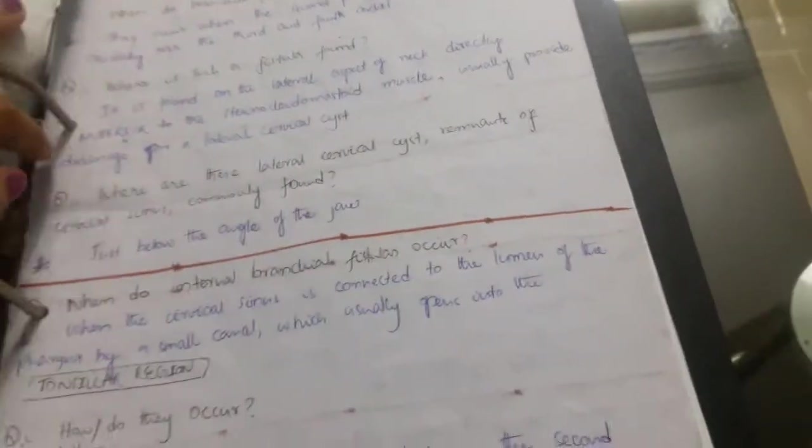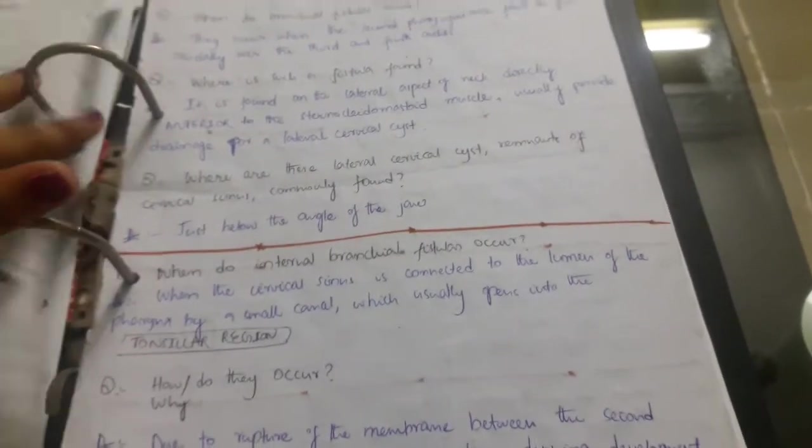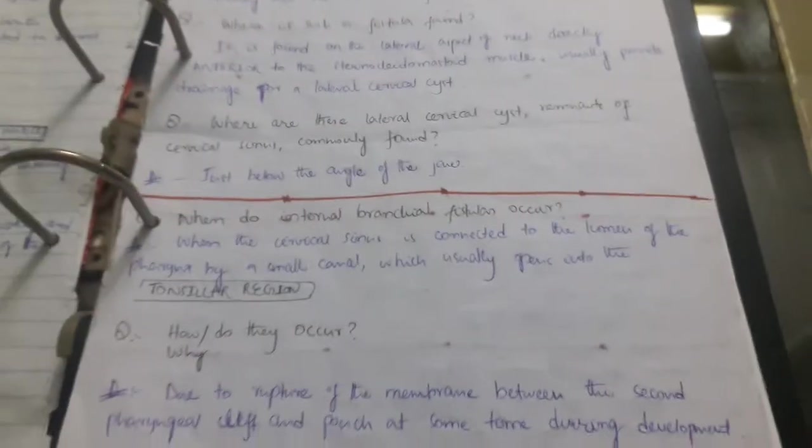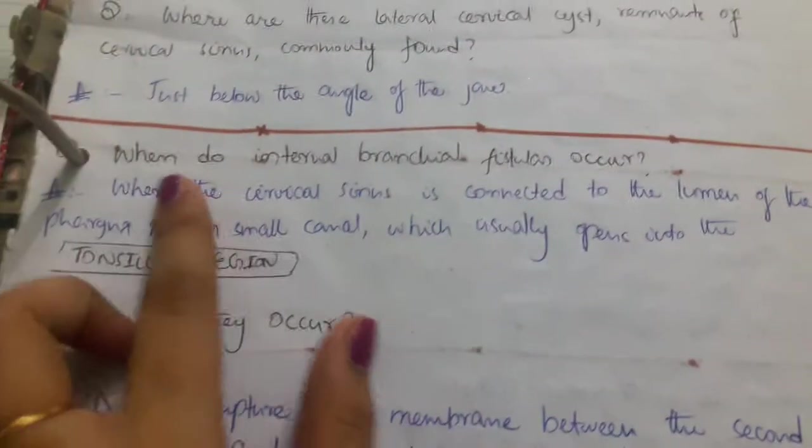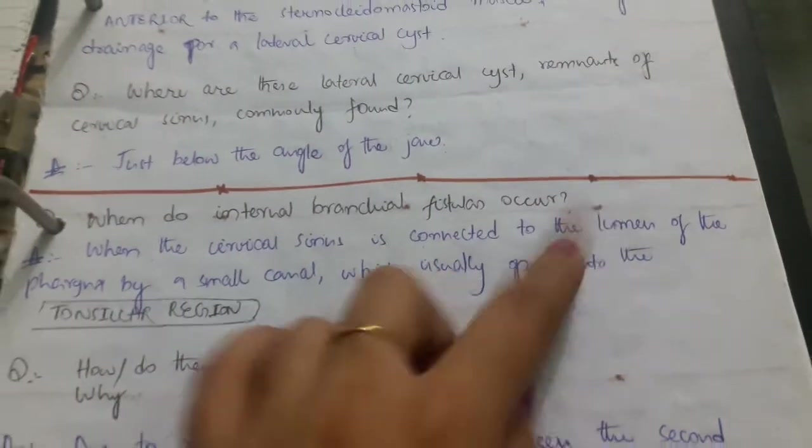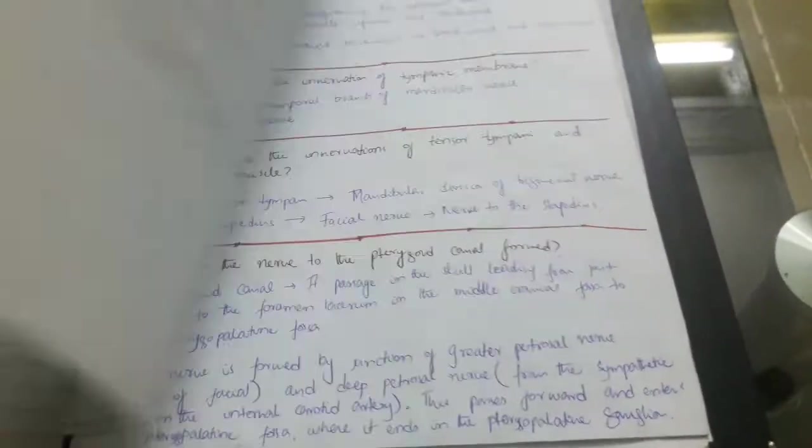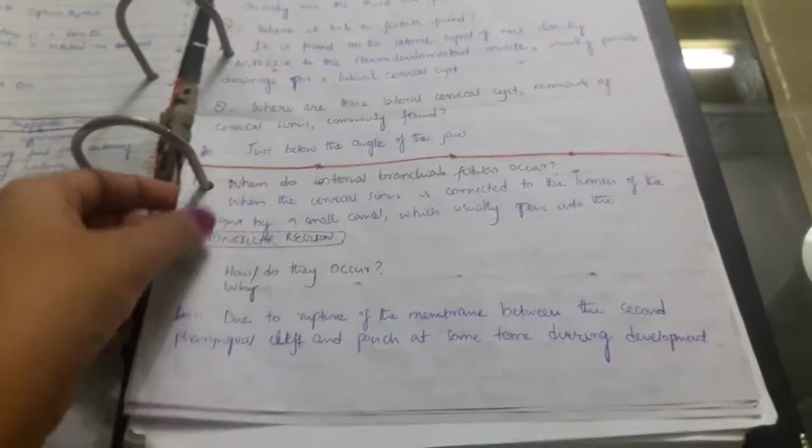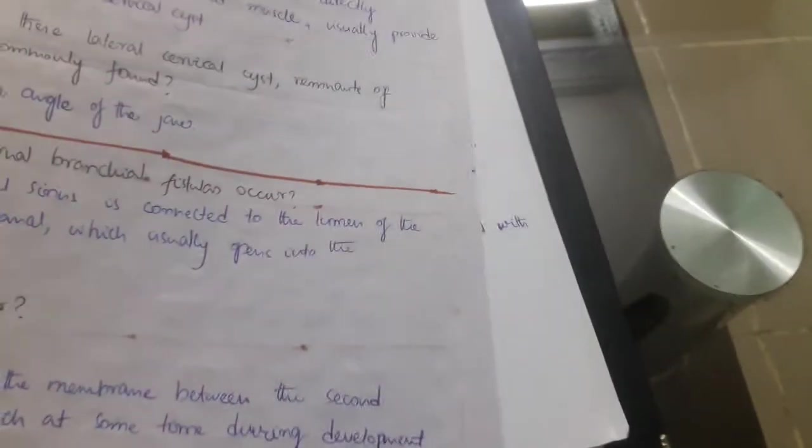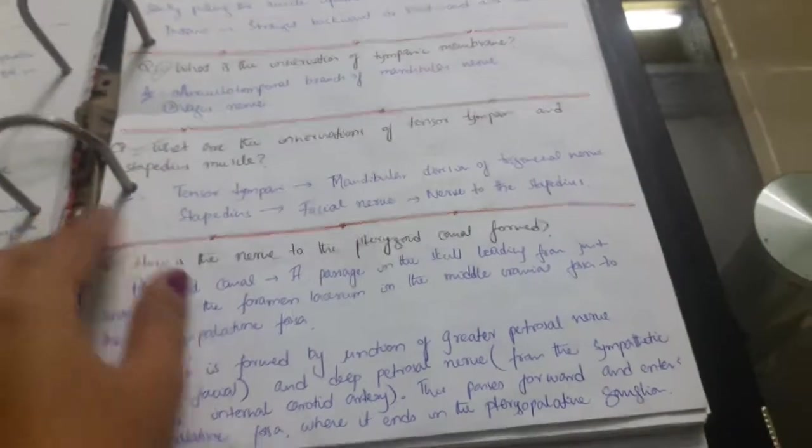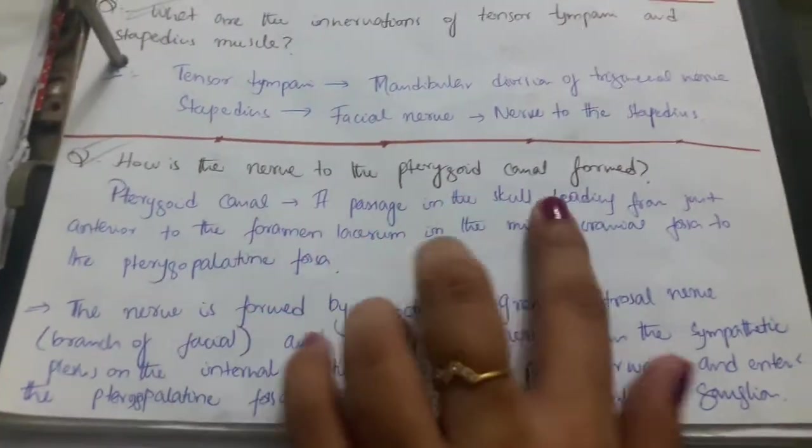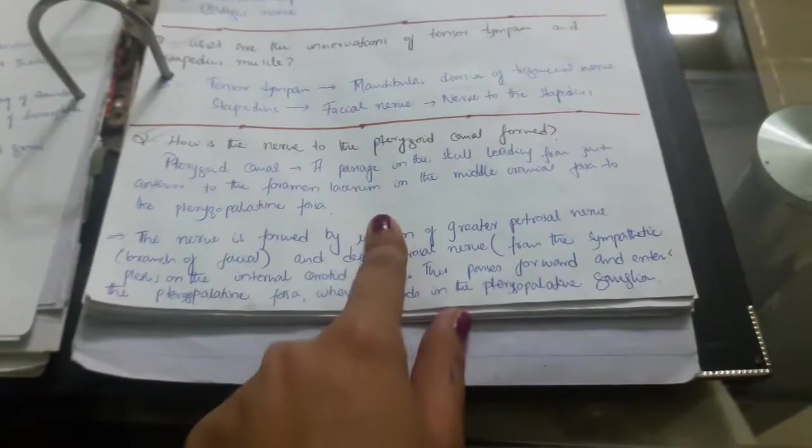I've done this for all three subjects - for histo, for embryo, and for gross anatomy and head and neck. Like this: when do internal brain cavernous fistulas occur? I've written how, why, and where they occur, and all these particular things that they can ask you. They'll give you a particular scenario and ask you these questions - where did the problem happen, where is the most likely cause, or what is the most likely diagnosis. You just have to really hammer down all these clinical notes in your head.